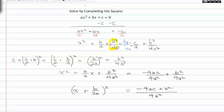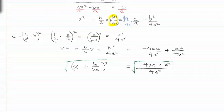Now, remember, if I want to solve for x, I have to take the square root of both sides. Now that I've taken the square root of both sides, I'm going to have x plus b over two a equal to the square root of negative four a c plus b squared all over four a squared.